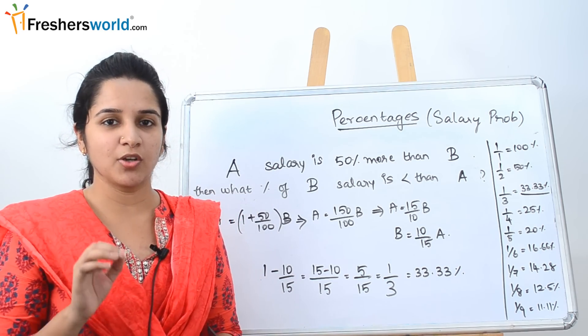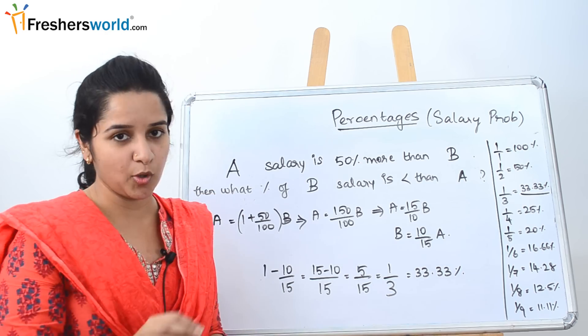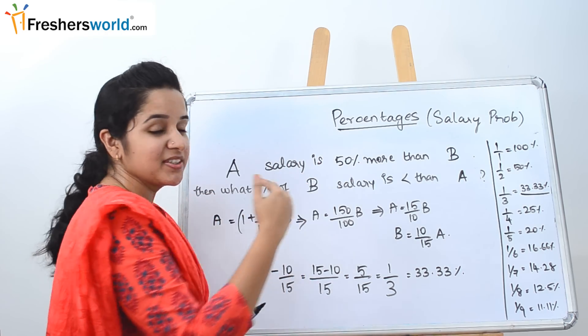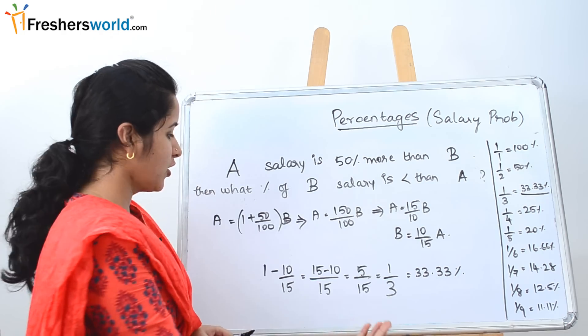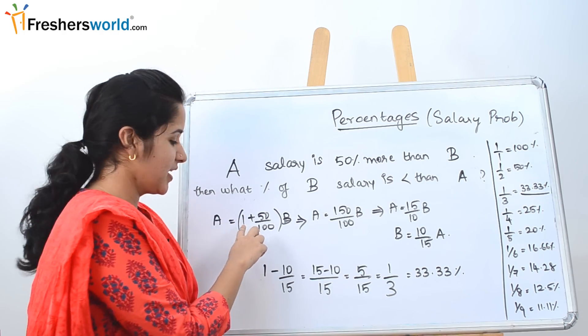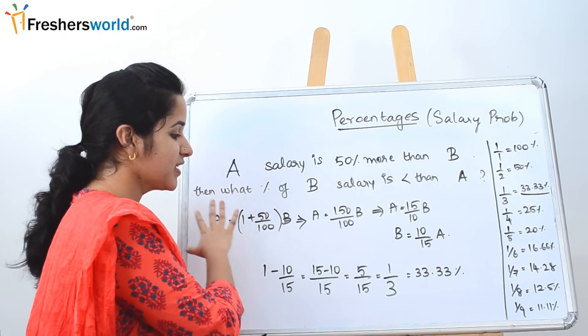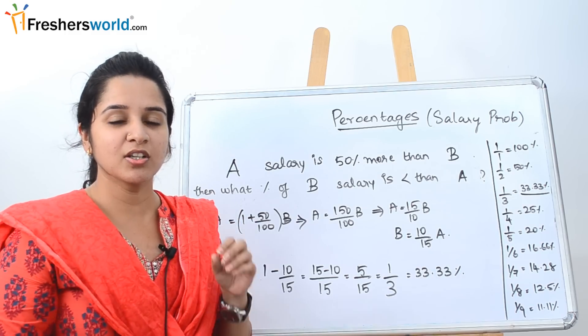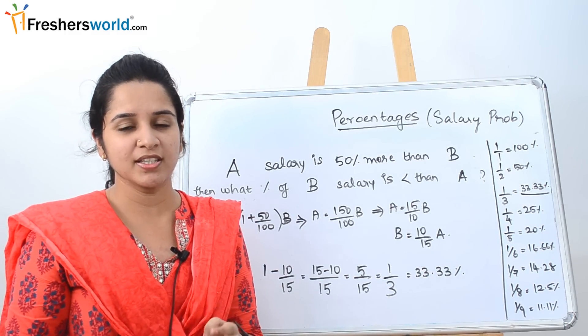In this concept, we are talking only about the salary problem. Similarly, they will be asking like 50% less than B. In that case, what you will do instead of plus, you will be putting a subtraction sign here and do the same way in which we did. This is a common type of problem when you will face in an aptitude exam.